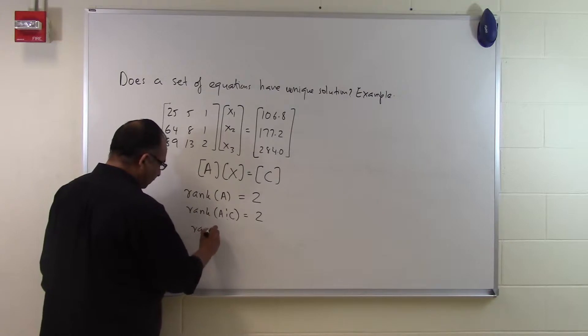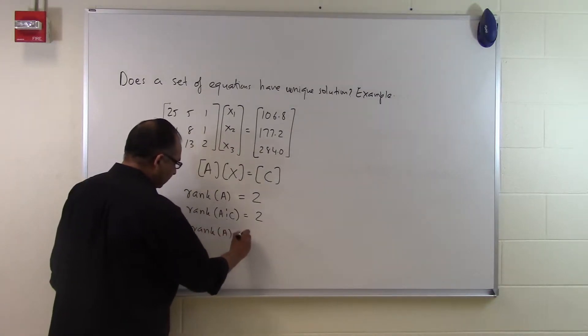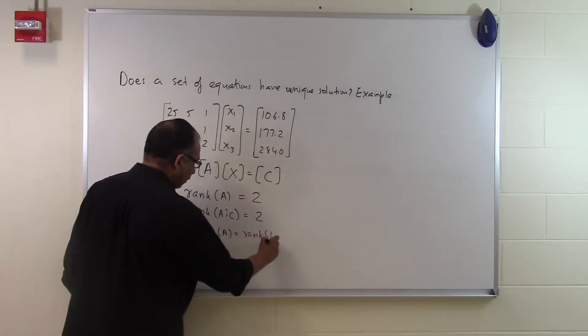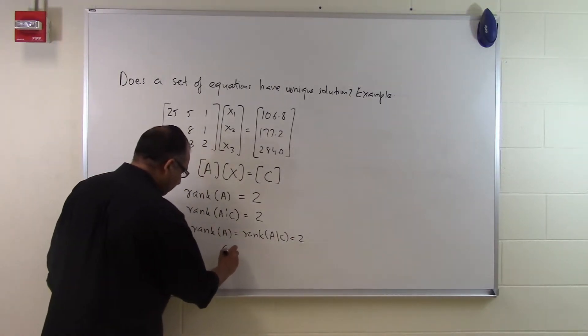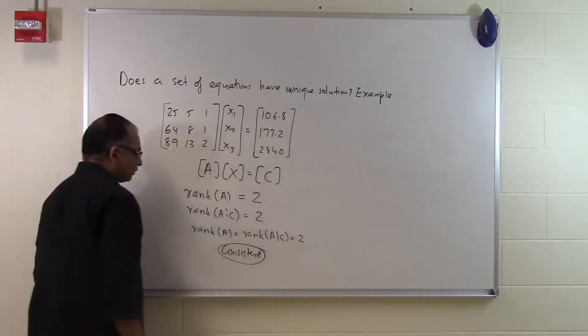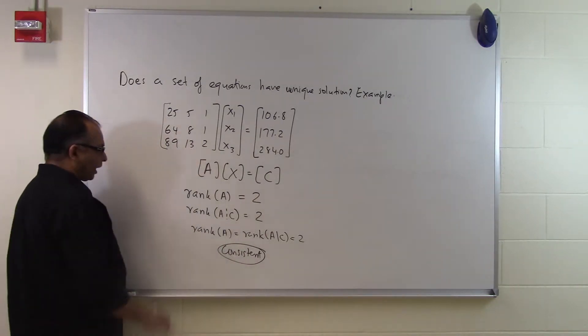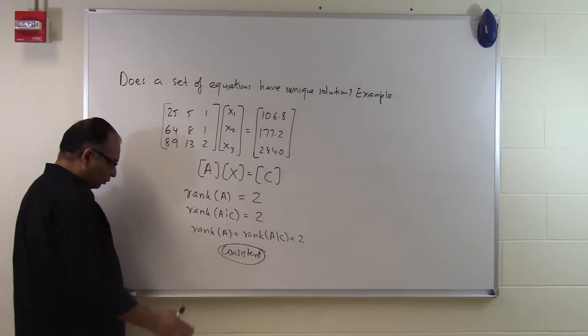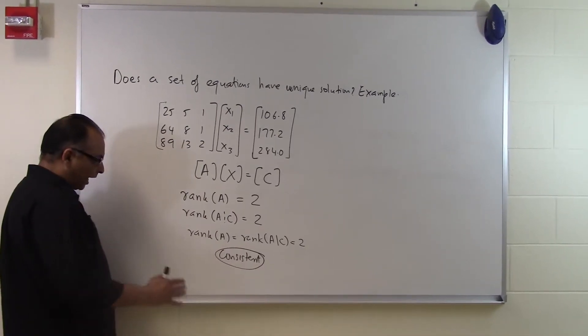So what you are finding out is that rank of A is the same as the rank of the augmented matrix, which is 2, which simply means that it is a consistent system of equations. So this set of equations which you have here is consistent. What do we mean consistent? Consistent means that it has a solution.